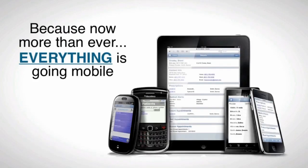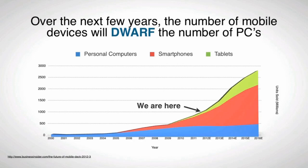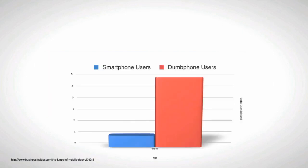Now more than ever, everything is going mobile. Right now the number of smartphones actually exceeds the number of PCs sold each year — this already happened. Over the next few years the number of mobile devices will actually dwarf the number of PCs. We are right around 2013 right now, and look what's coming towards us in 2016 — it's literally going to triple. It's like a tidal wave coming towards us, and we are literally right at the beginning. 80% of the world's population has a mobile device, and 1.8 billion of them are smartphones. 1.5 million new smartphones get activated every single day.